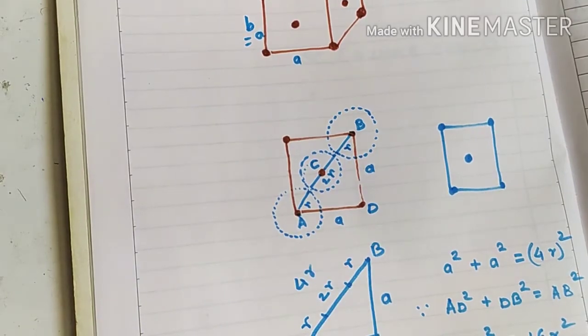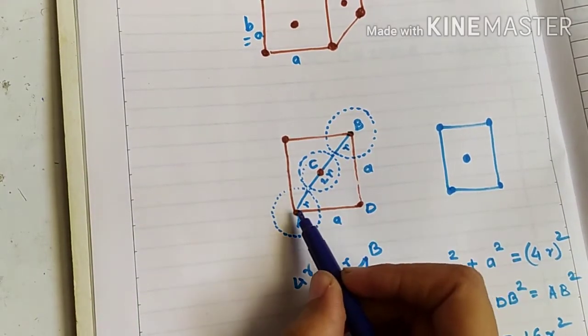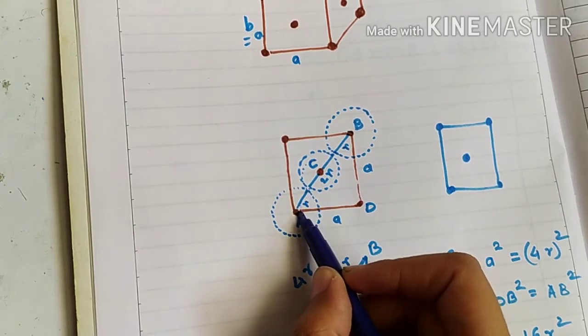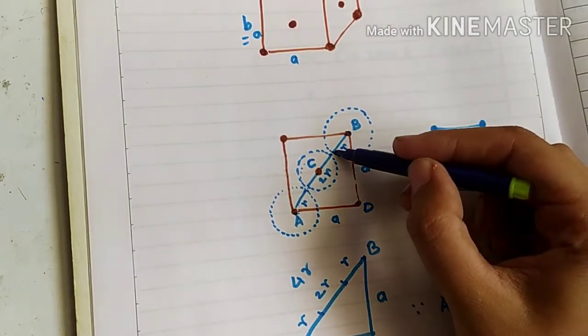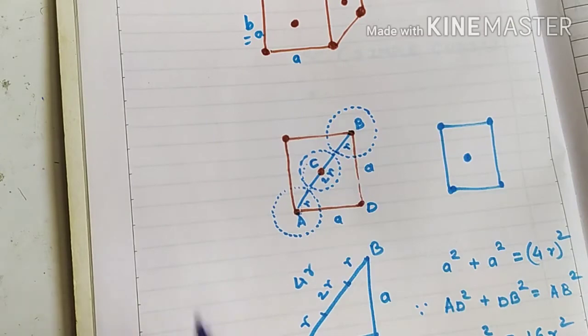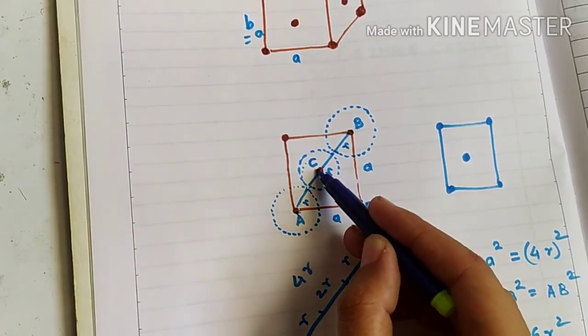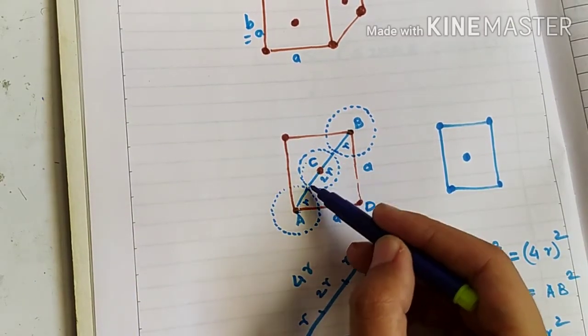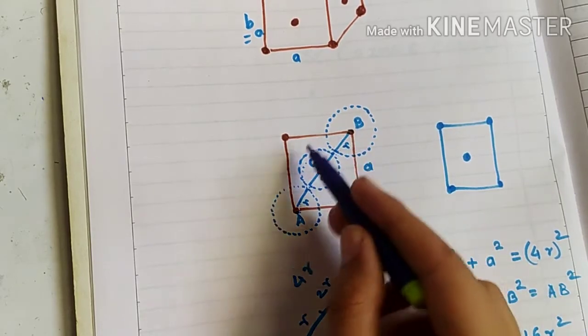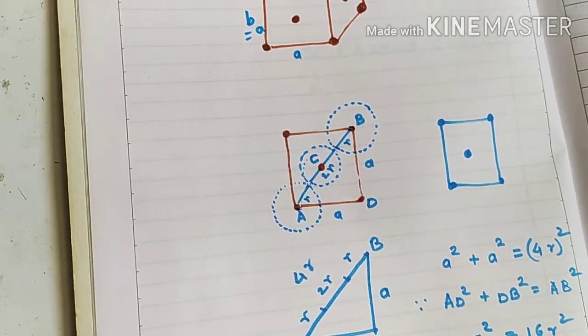So if we consider atom a, so r would be its radius. If we consider atom b, again r would be its radius. And in this unit cell, if we consider atom c, so c is two time radius is included in this face of the unit cell.